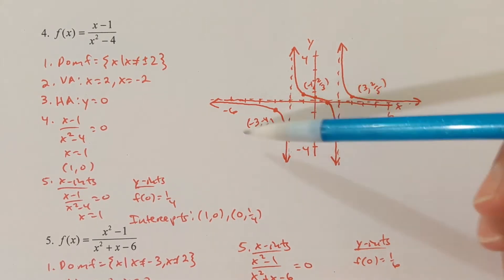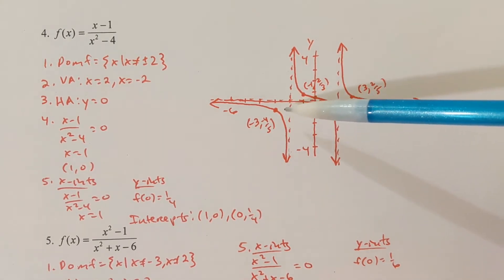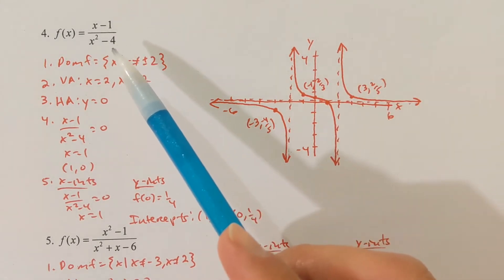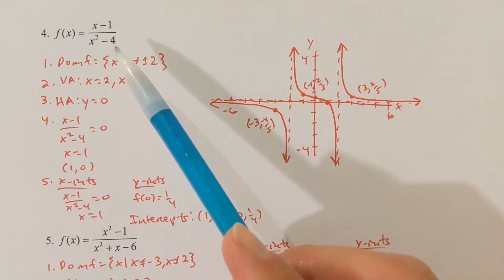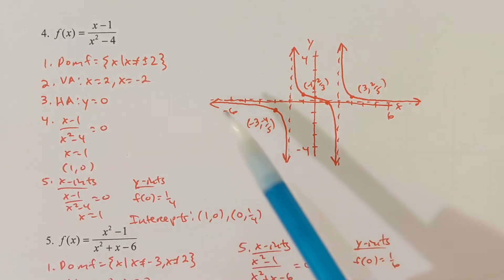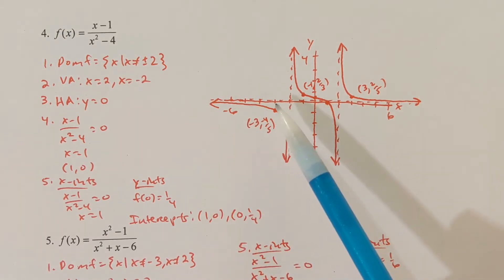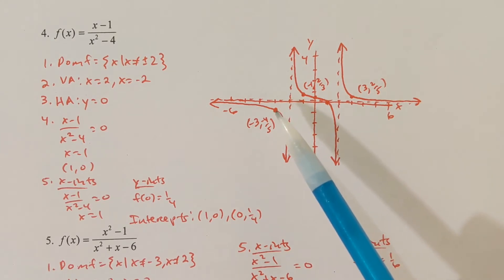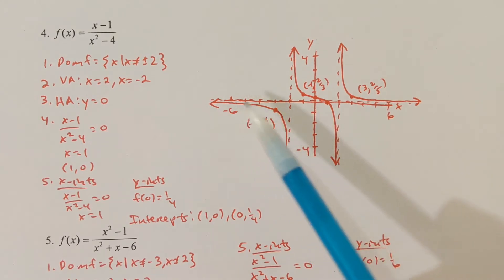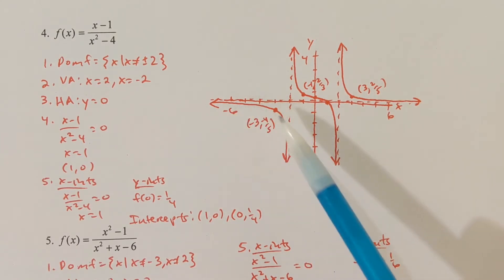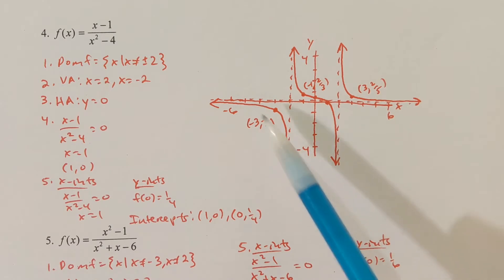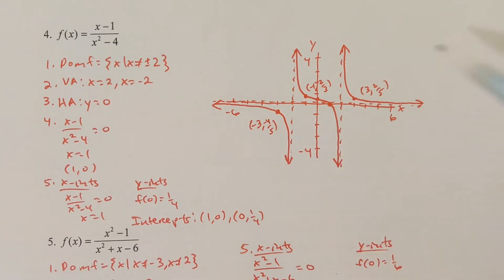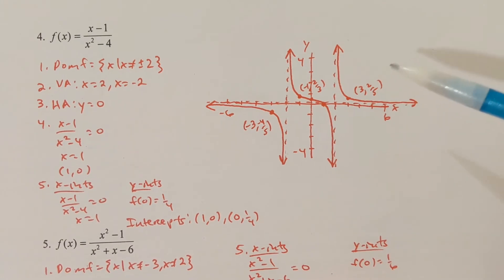In order to get the left section, I'll select x equals negative 3. Negative 3 minus 1 is negative 4. Negative 3 squared minus 4 is 5, so negative 4/5. That single point in quadrant 3 tells me that the rest of the left section of the graph is going to be located in quadrant 3, flowing with the two asymptotes.